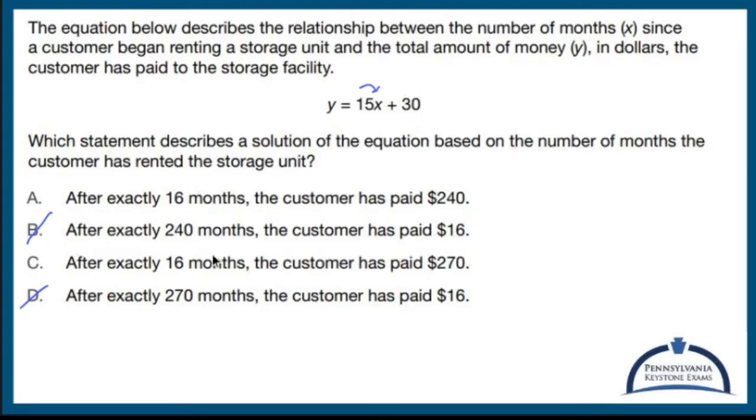A and C are like, well, let's test out 16 months. So let's do that. Y equals 15 times 16 plus 30. 15 times 16 is 240. 240 plus 30 is 270.